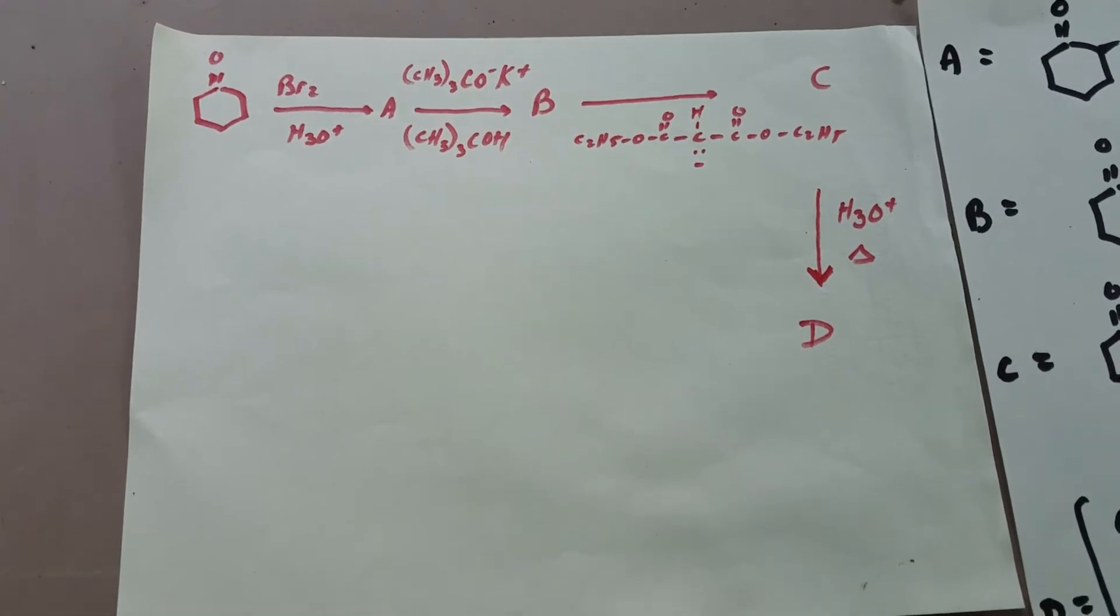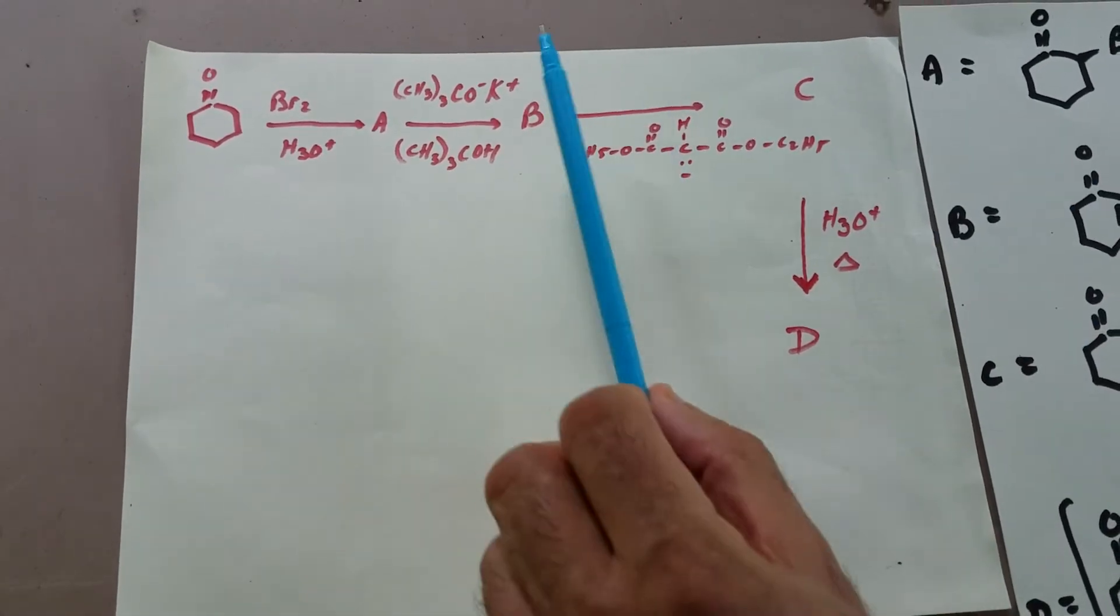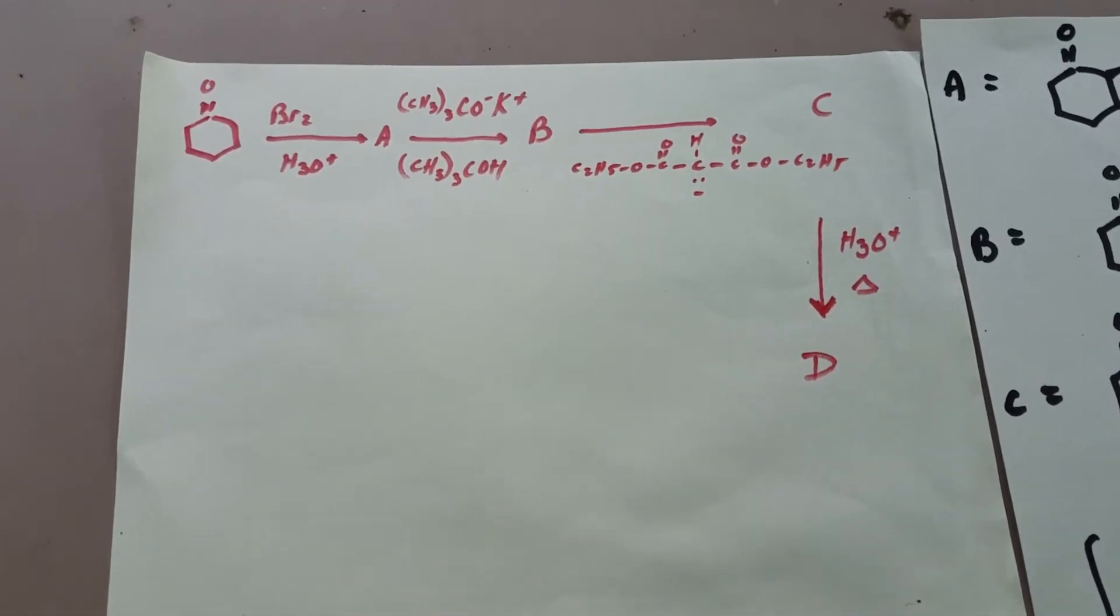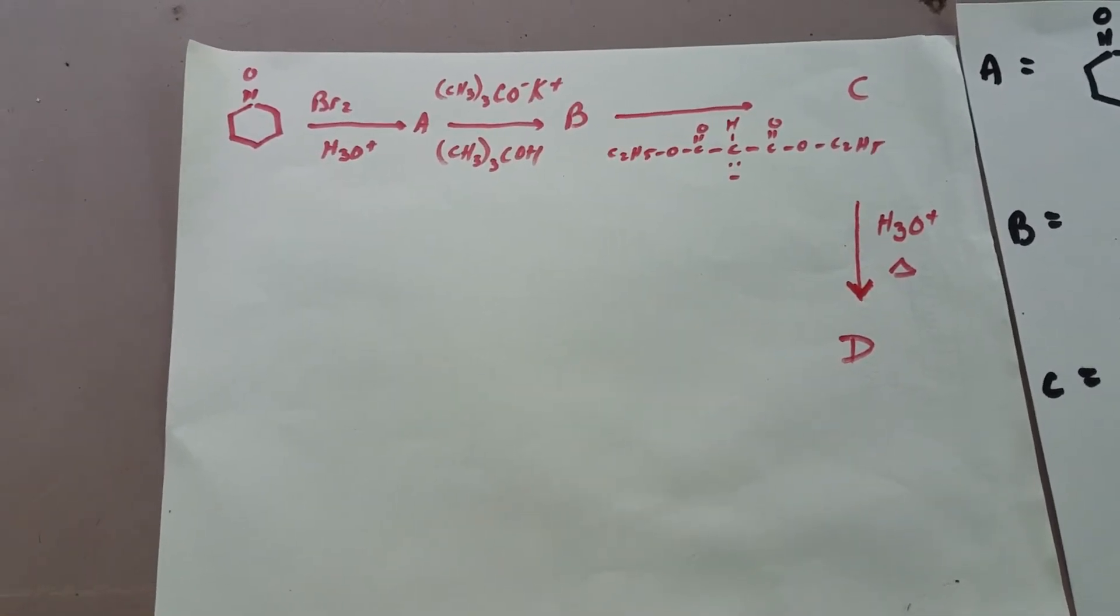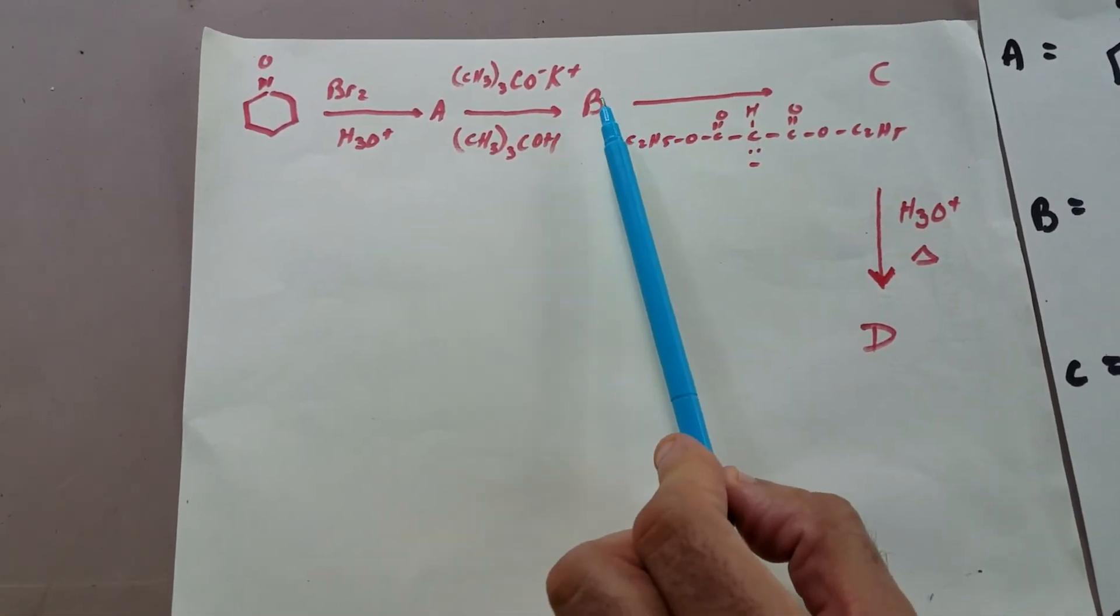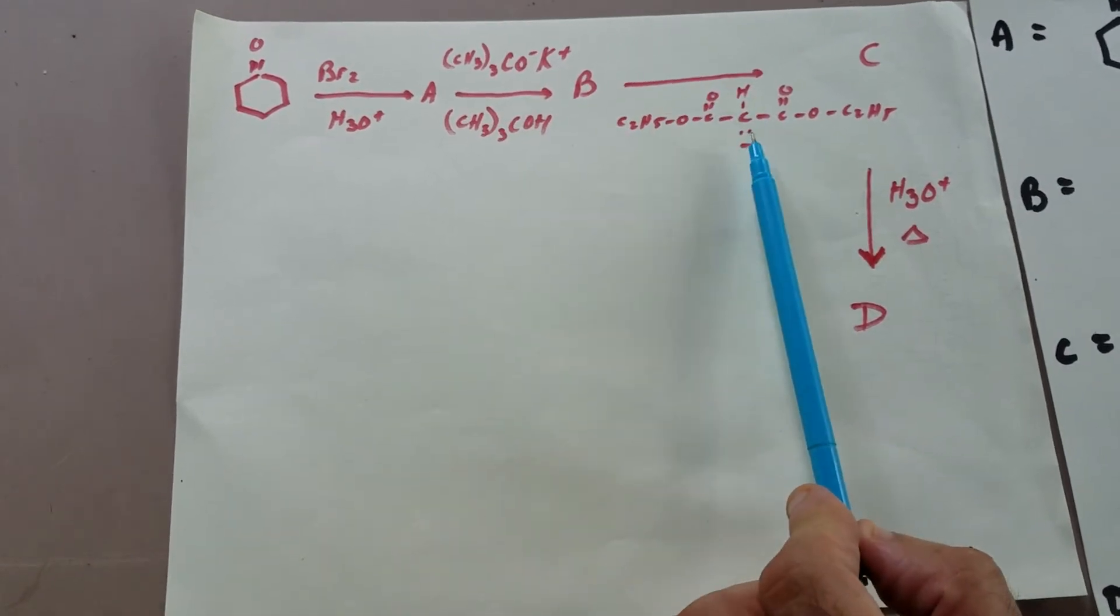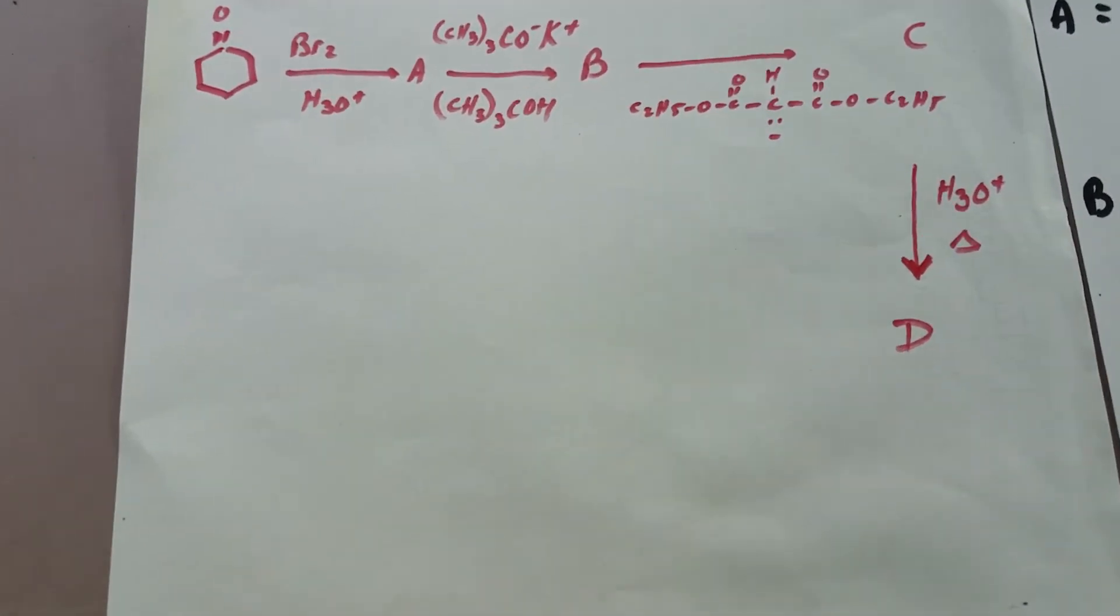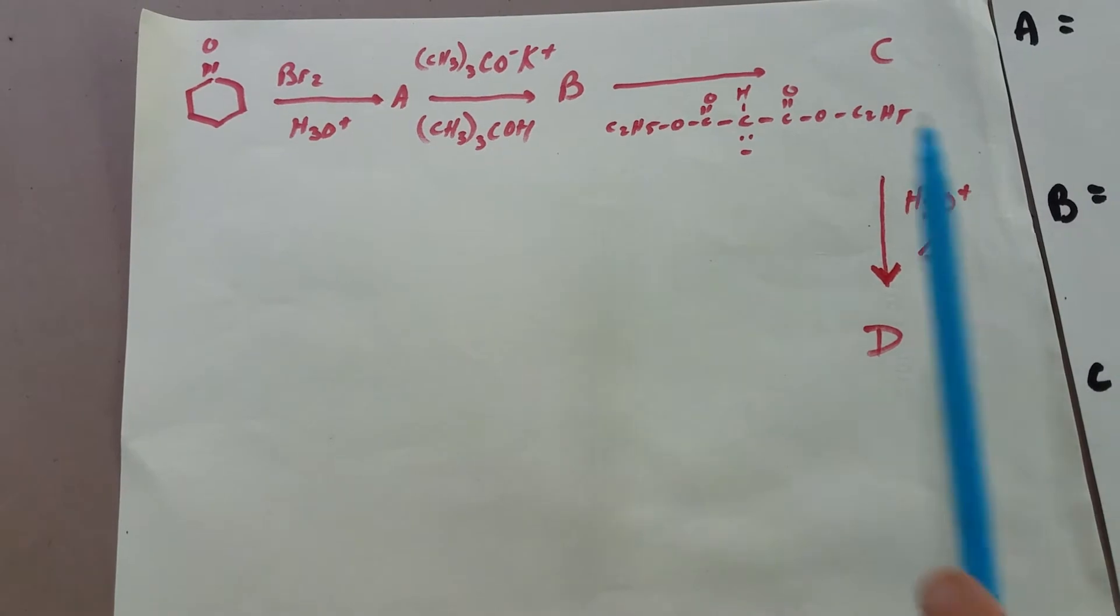with a very strong sterically hindered base such as potassium t-butoxide, could have also used DBU or LDA. Once you get B, I'm going to then treat it with the anion of a malonic ester, just think of this...